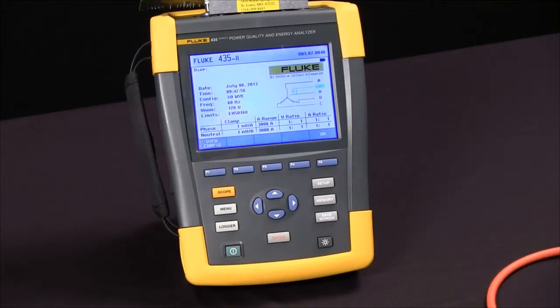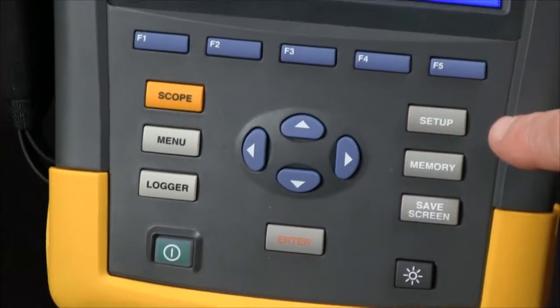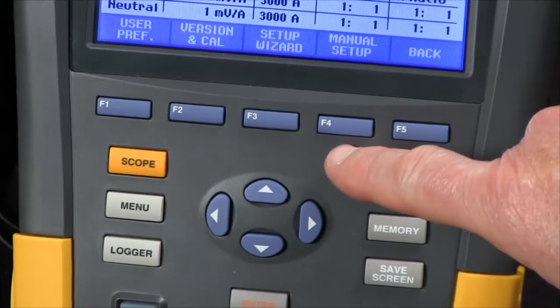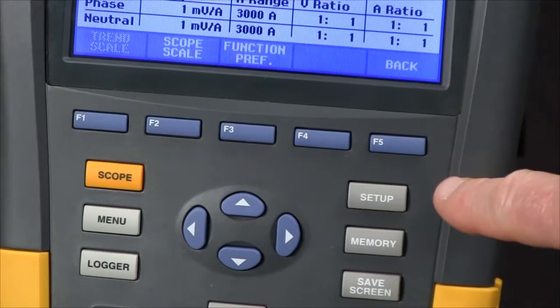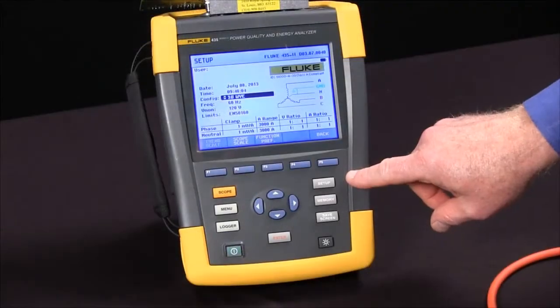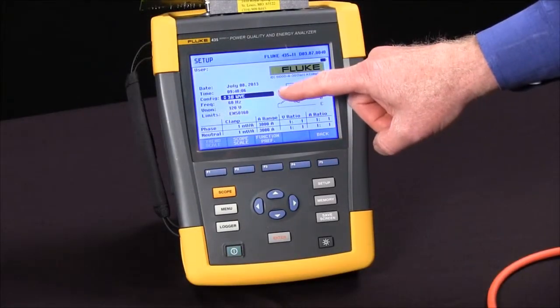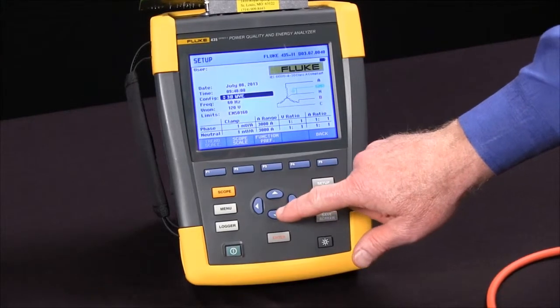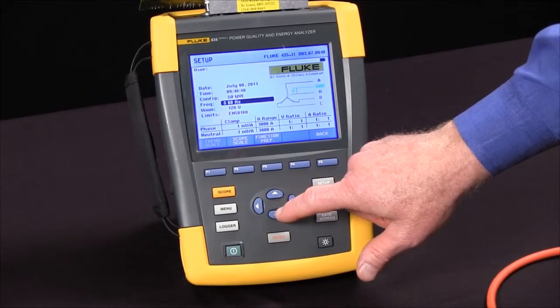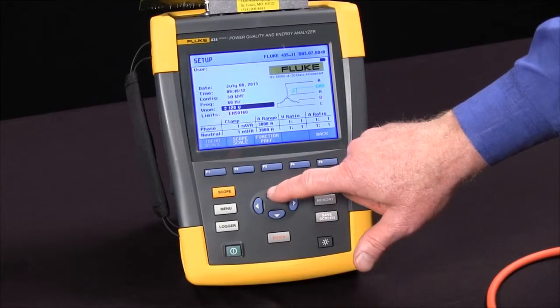We're going to start out by hitting the setup key and then F4 for manual setup. Once we've done that, we'll see a black field on the screen that we can move with our arrow keys up and down. You can select nominal frequency, nominal voltage, etc.